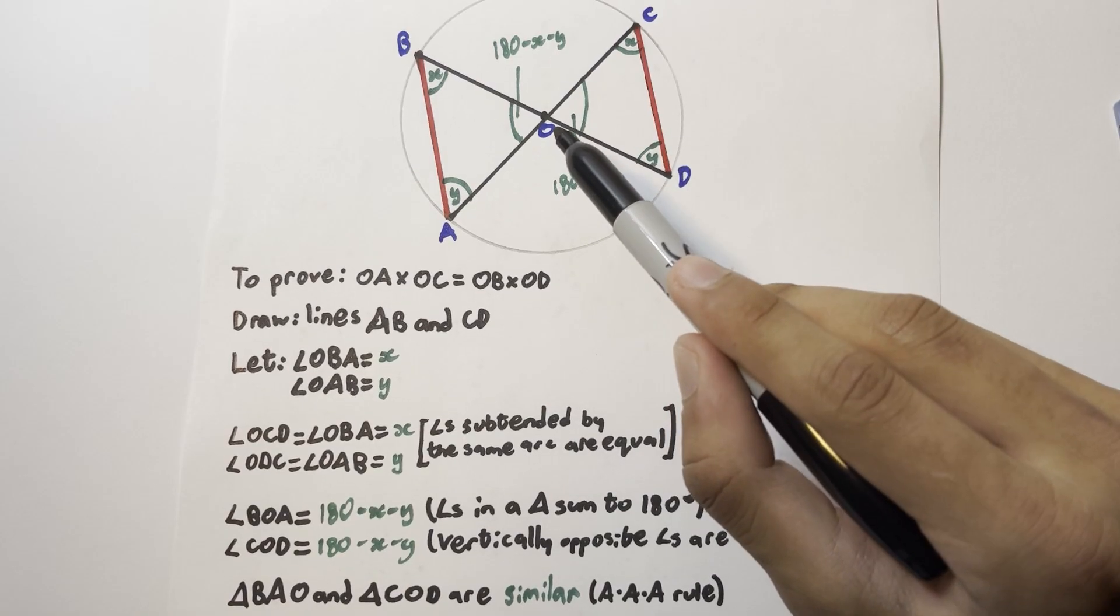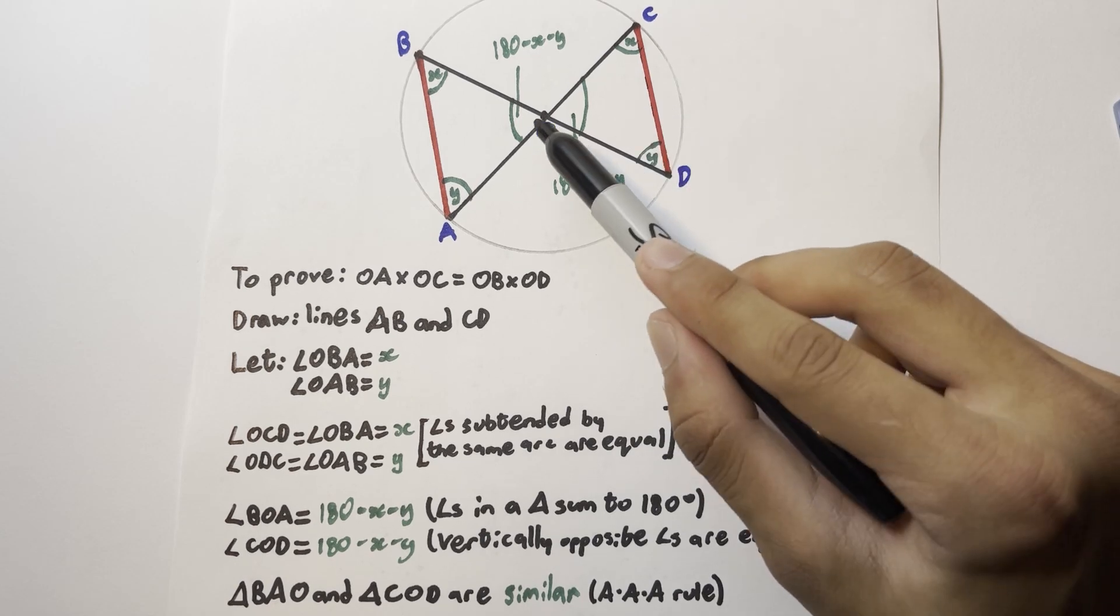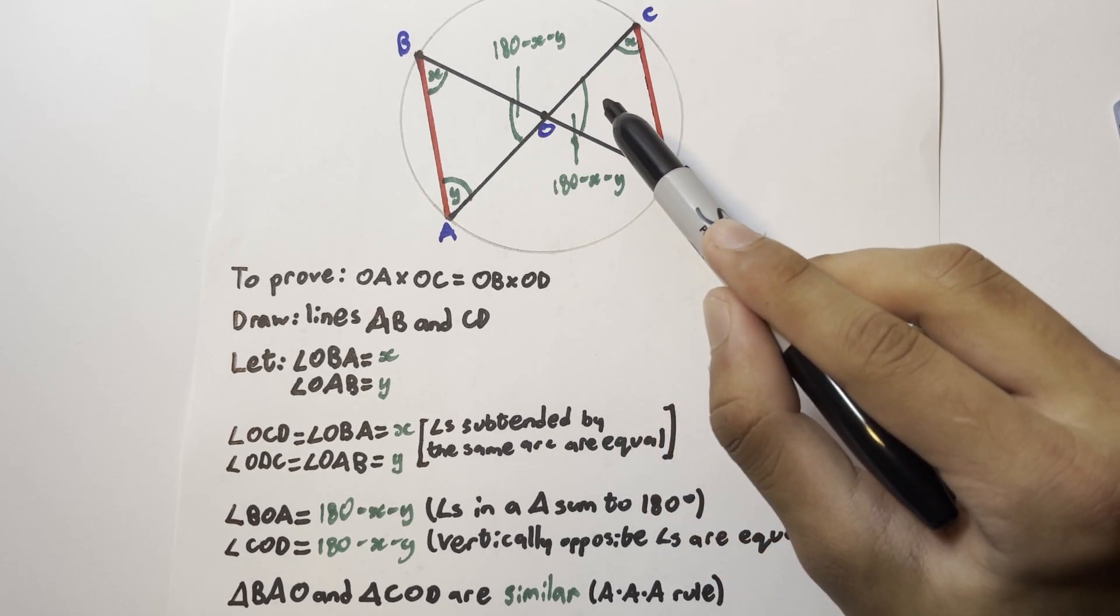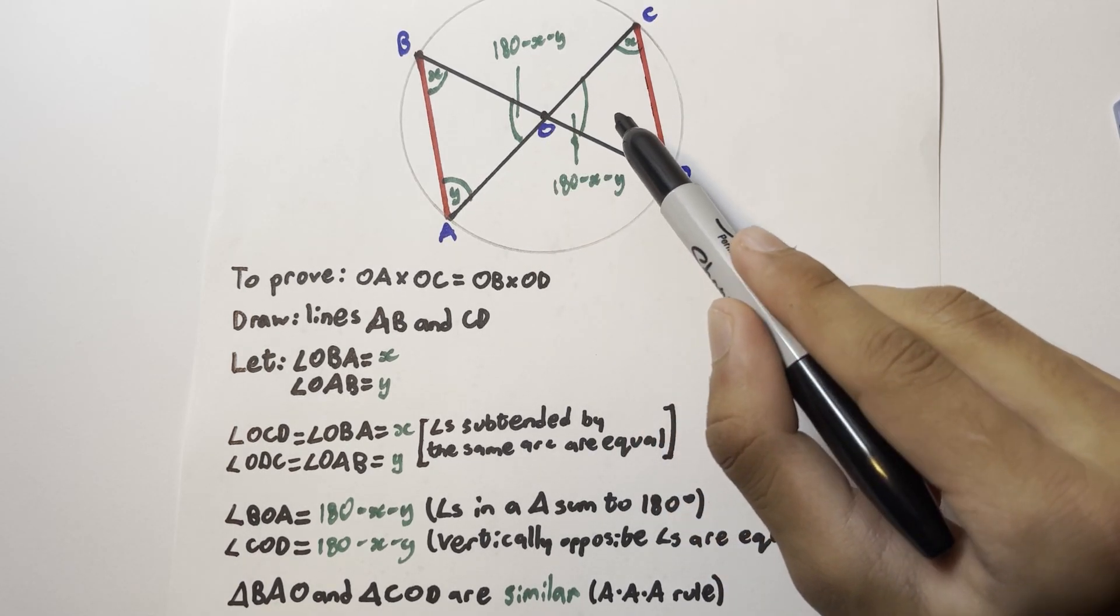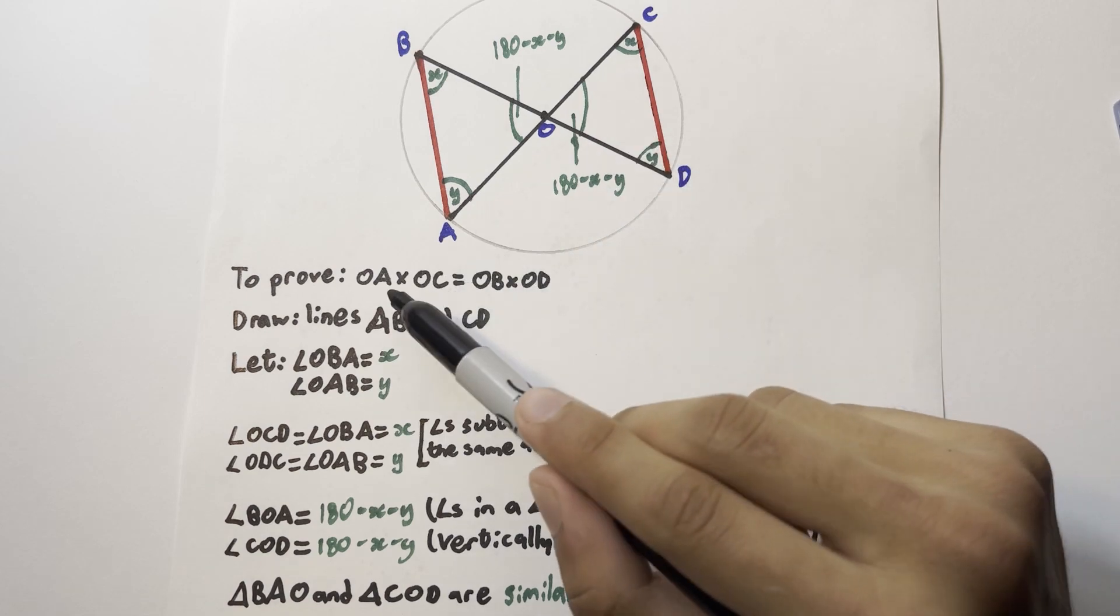Similar triangles have the same ratios between their sides, so we can redraw these triangles, work out which sides correspond to which other sides, work out the ratio between them, and see how we can prove our theorem from there.